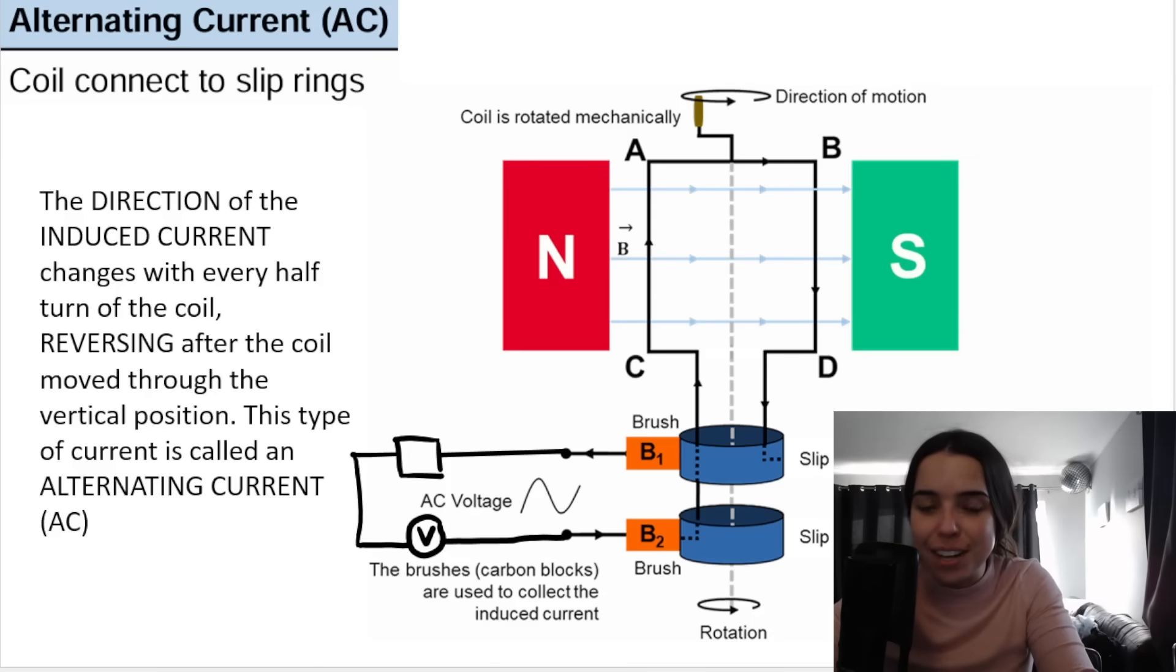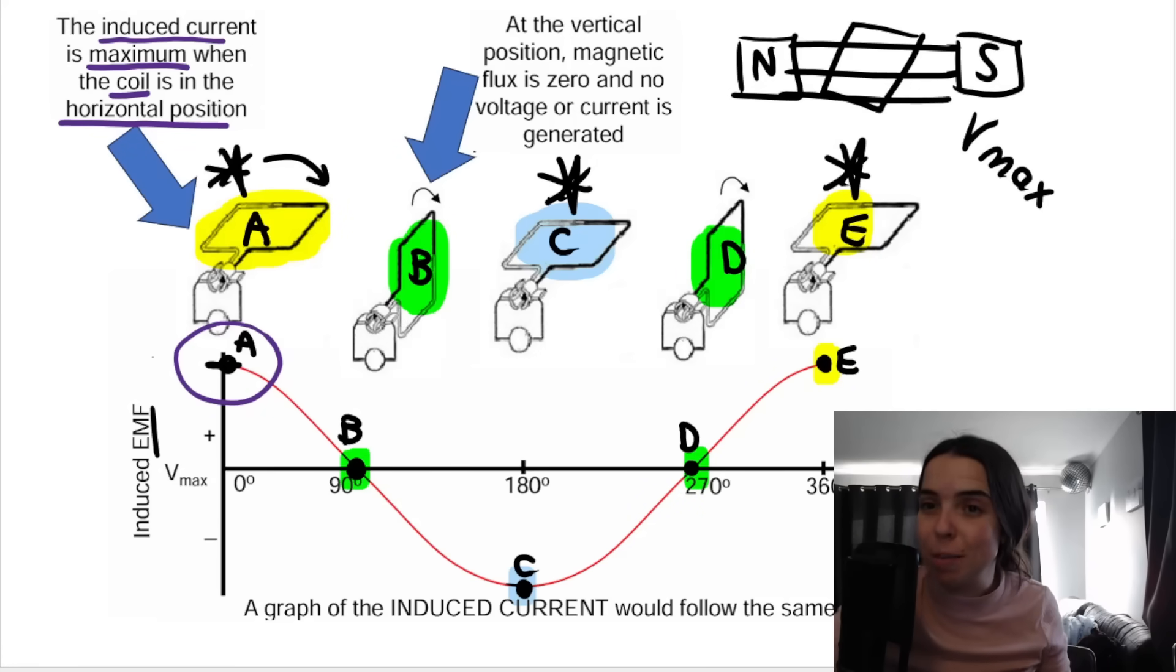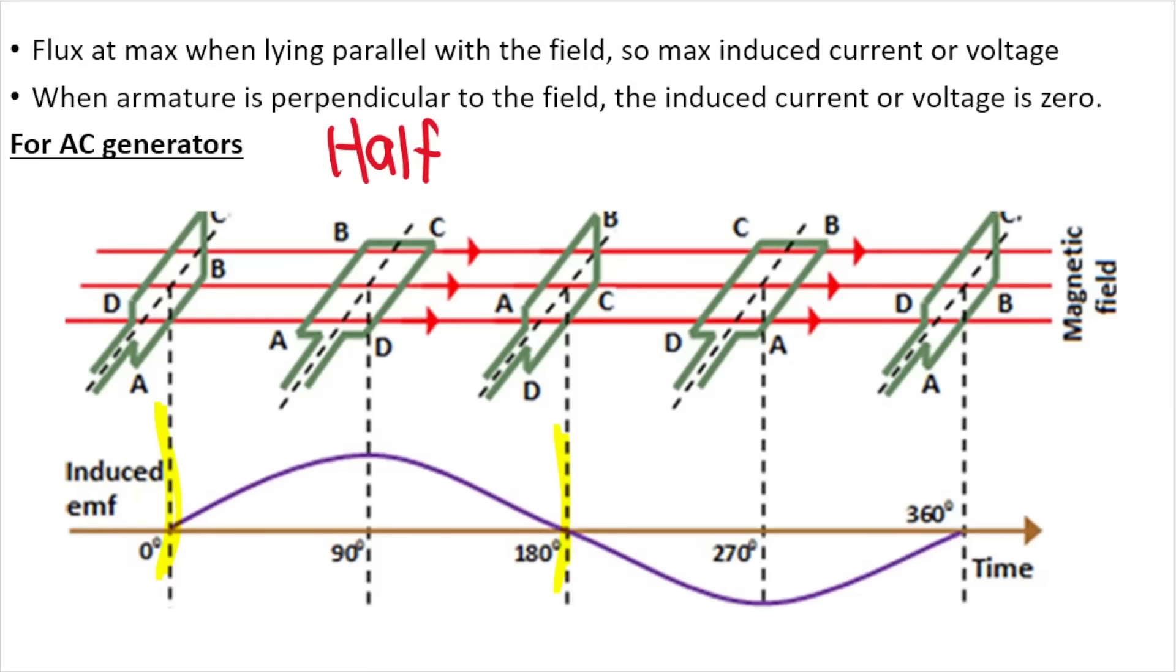It's called alternating current and you'll remember that it produces a graph that can look something like this graph or like this graph. It just depends on how the coil starts, which position it starts in.